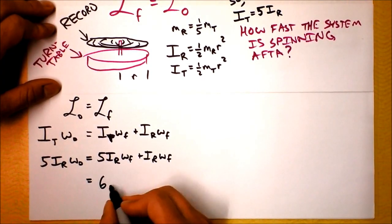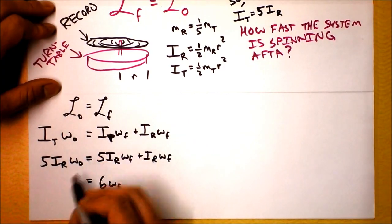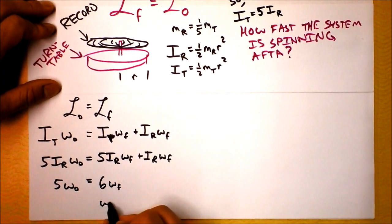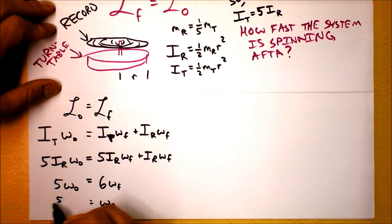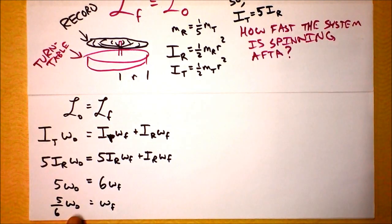Cancel some things. This is 6 omega final, and this is 5 omega naught. So if we're looking for omega final, it's 5 sixths of omega naught. Yeah, okay, so it's slowed down, but just a little bit. And again, by the ratio of the masses. So I hope nobody's particularly surprised at that. There are two more things I want to say before I go on.